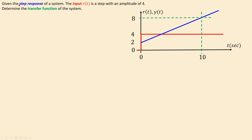We have the following situation. The step response of a system is given and the input R, shown here in red, is a step signal with an amplitude of 4. The response is the blue line. In this case it is a sort of integrator, as discussed in the previous example, but it has a shift of 2 at the origin. So it doesn't start at the origin — it starts at 2. Then it has a constant slope, so it is a sort of integrator but also has some gain at the origin.